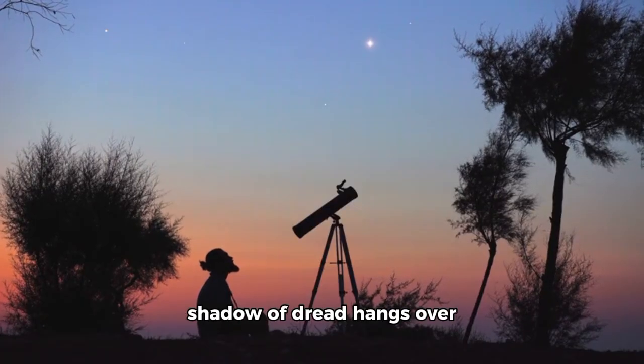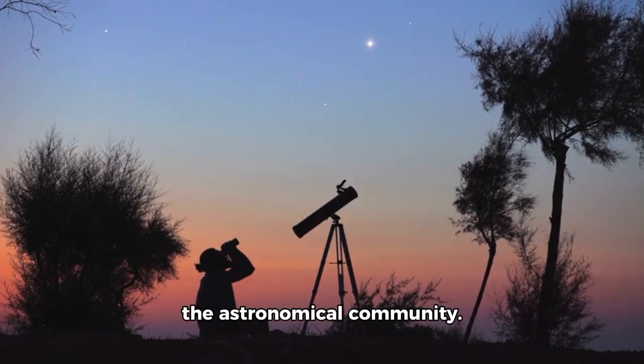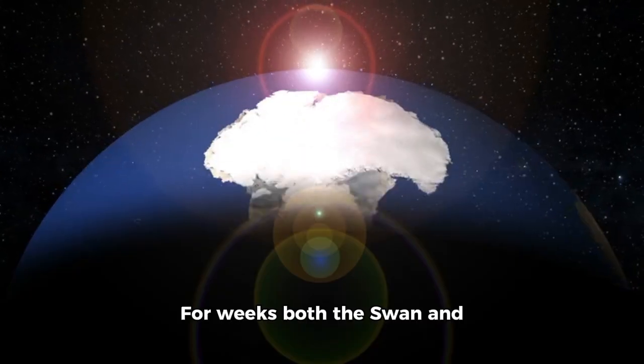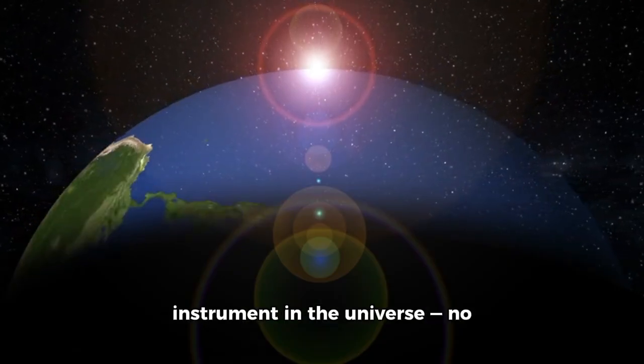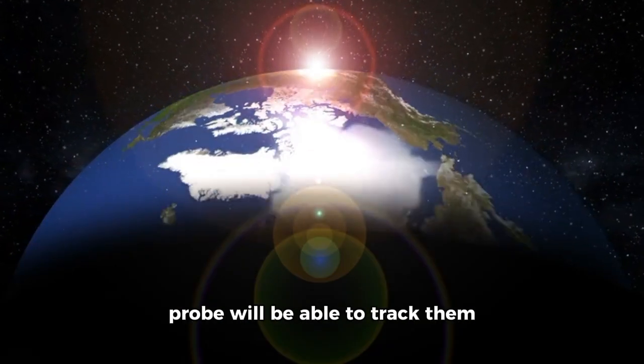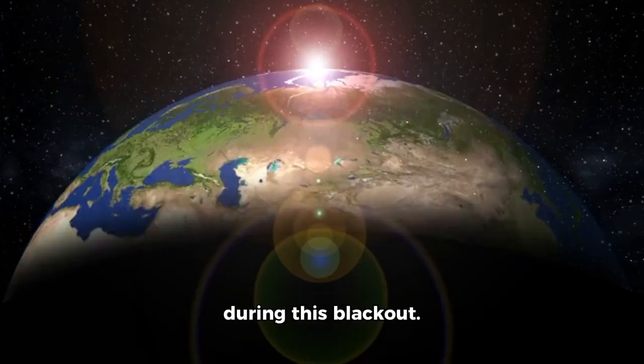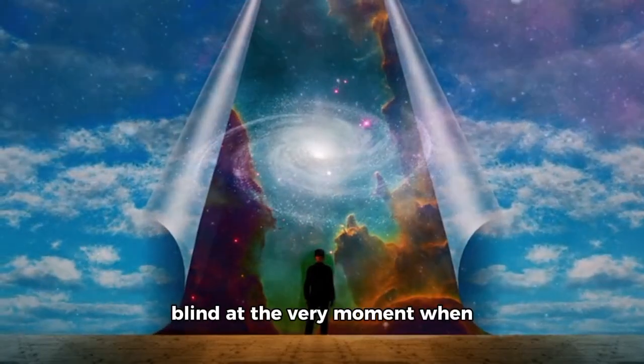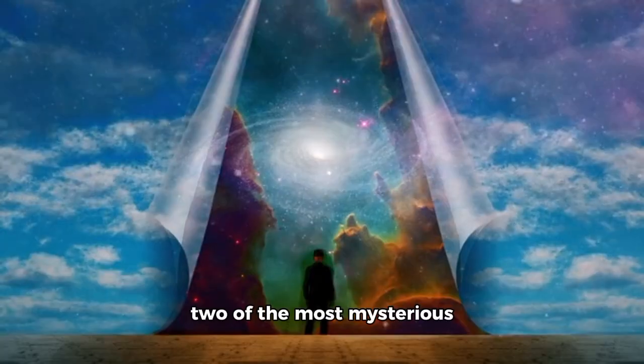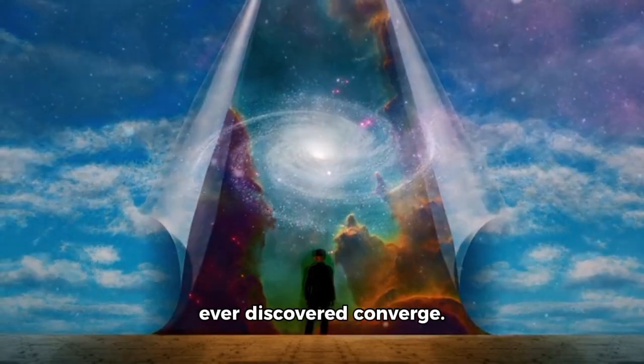As October approaches, a shadow of dread hangs over the astronomical community. For weeks both the SWAN and 3i Atlas will hide behind the sun and disappear from every instrument in the universe. No human eye, no telescope, no probe will be able to track them during this blackout. It is as if the universe itself has drawn a curtain, leaving us blind at the very moment when two of the most mysterious objects in interstellar space ever discovered converge.